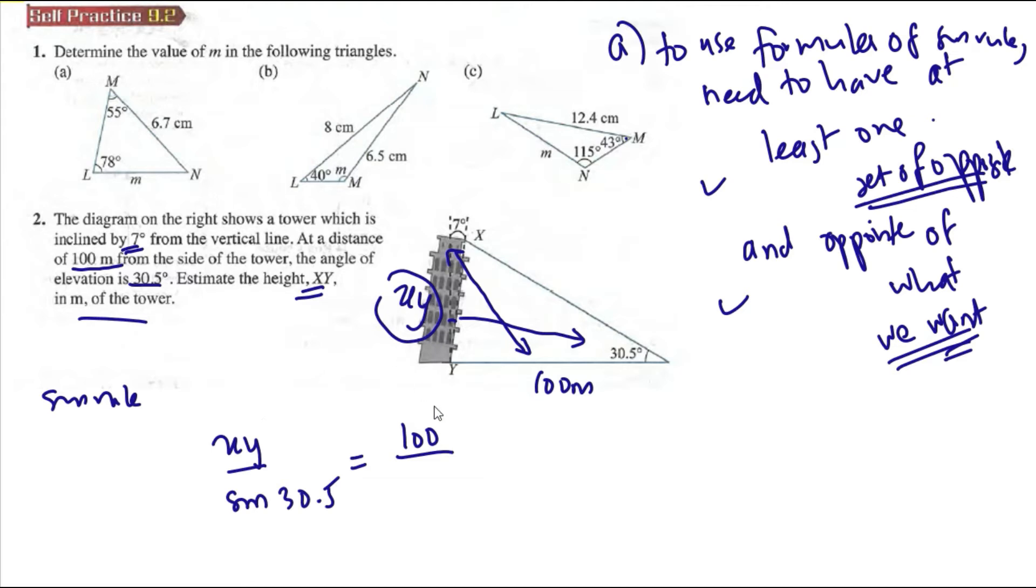So angle sin theta - this is a triangle. Now we have 30.5, and this is 90 degrees.